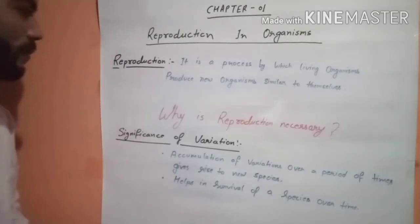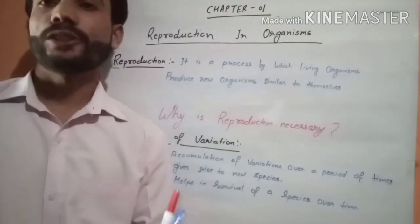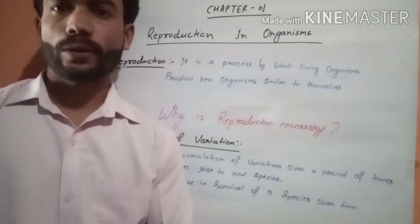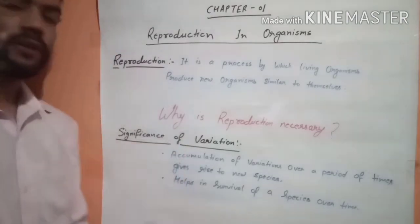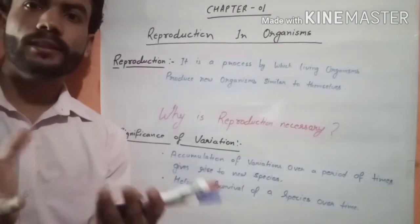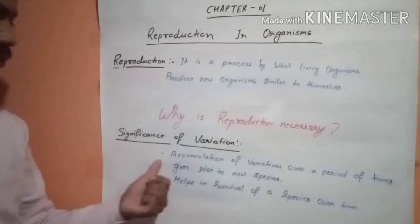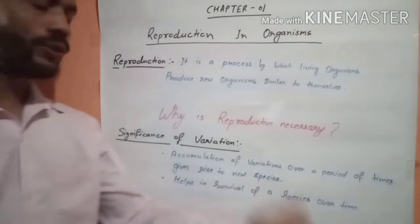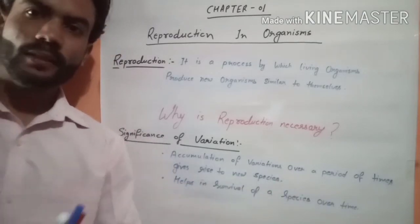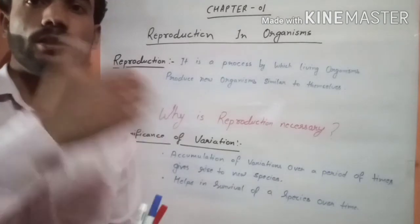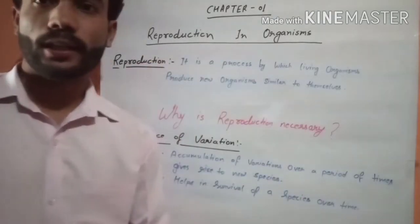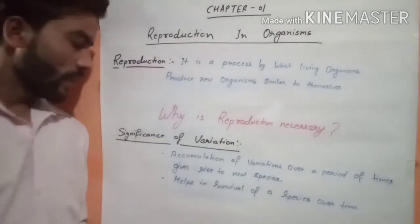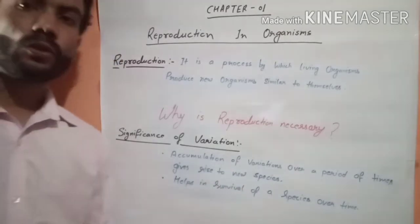Variation को थोड़ा और detail में देखते हैं। Variation का मतलब होता है changes, variety. नई species में changes आएंगे — significance of variation की बात करते हैं। Accumulation of variation over a period of time gives rise to new species. अगर reproduction की process चलती रहे और हर generation में थोड़ा variation आता रहे, तो finally एक नई species हमें देखने को मिलती है।